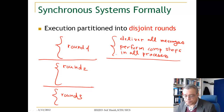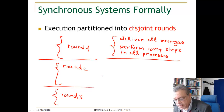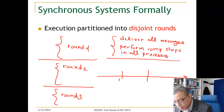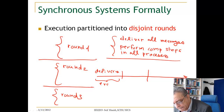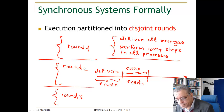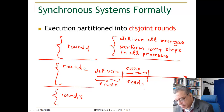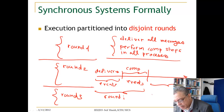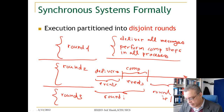One way of seeing this: looking at an execution, a round starts with delivery events followed by computation events until no more computation events can be performed. This is round I, and then you continue with round I+1.